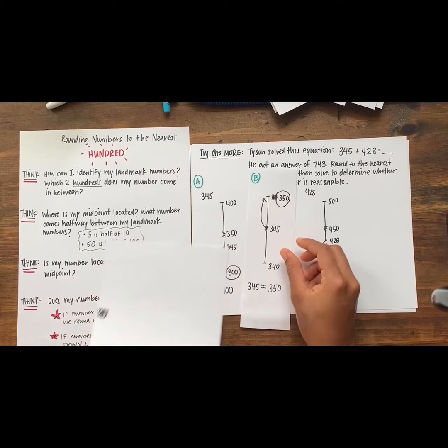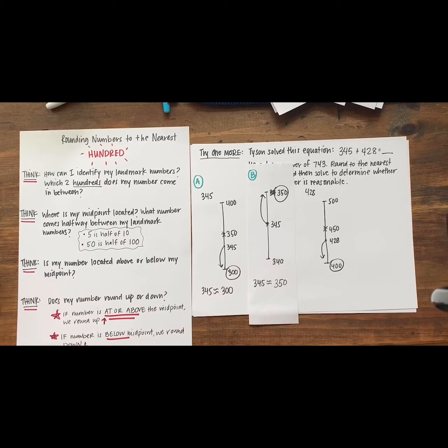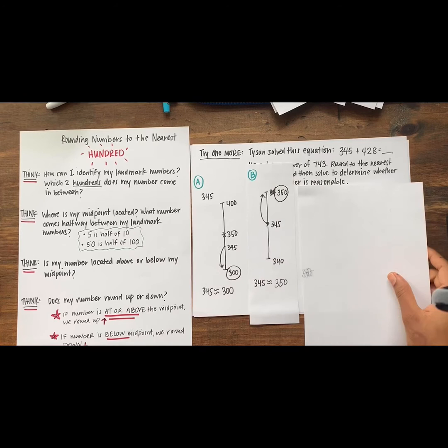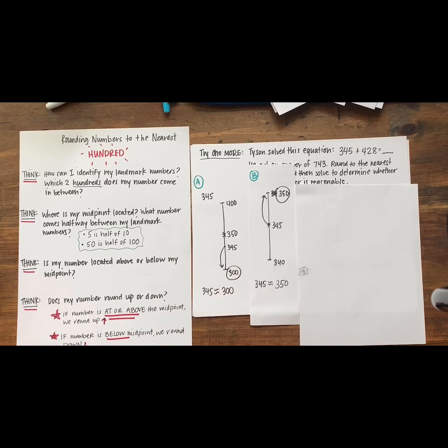I want us to take a closer look at some work for rounding 345. Here I have work from student A and student B. If we are rounding to the nearest hundred, which friend accurately rounded 345 and why?